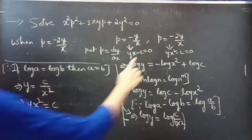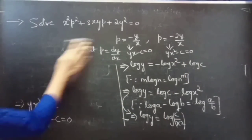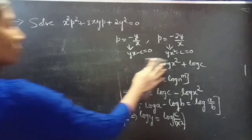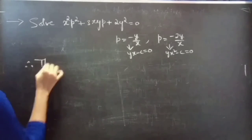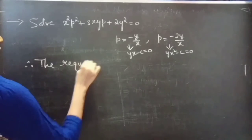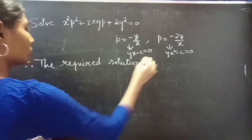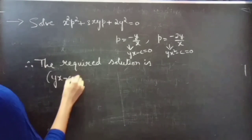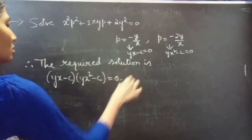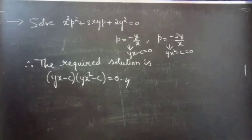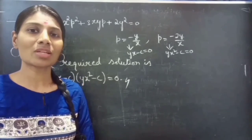The combined form of these two solutions is the required solution for the given differential equation. Therefore the required solution is (yx minus c)(yx squared minus c) equals 0. This completes the problem. We have seen a problem from Solvable for P in this video. Hope you understand. We will see you in the next video — until then, bye!